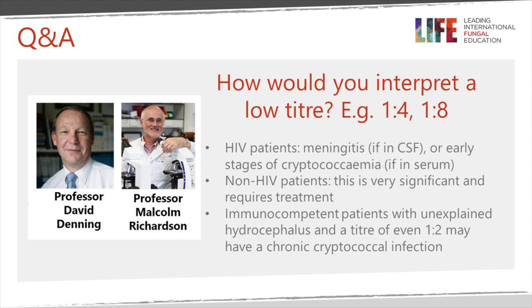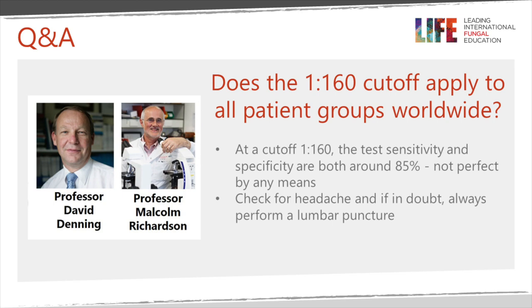The question about whether the CrAg titer value of 1 to 160 is fixed or varies by region: the sensitivity and specificity of that titer for meningitis is around 85 percent, so it's not a perfect measure. Having a headache of any sort is also another means of assessing a patient who may have cryptococcal meningitis — both factors need to be taken into account. If there's any doubt then a lumbar puncture is the right thing to do, partly because you can then be confident about the best treatment, which would be amphotericin and flucytosine. If the lumbar puncture is negative, the patient can be treated as an outpatient with fluconazole with or without flucytosine.